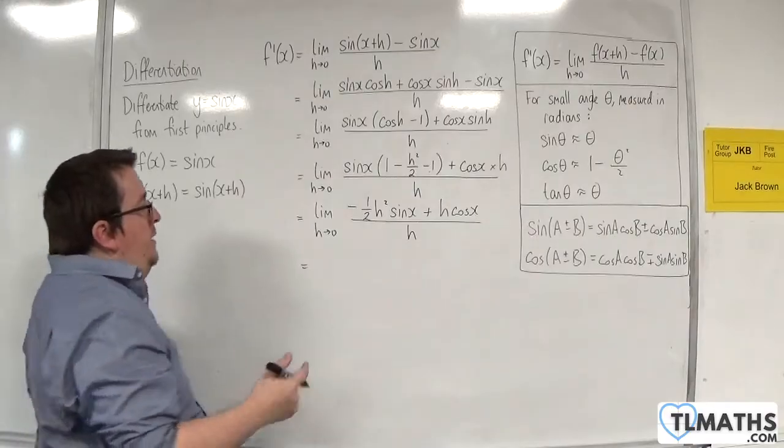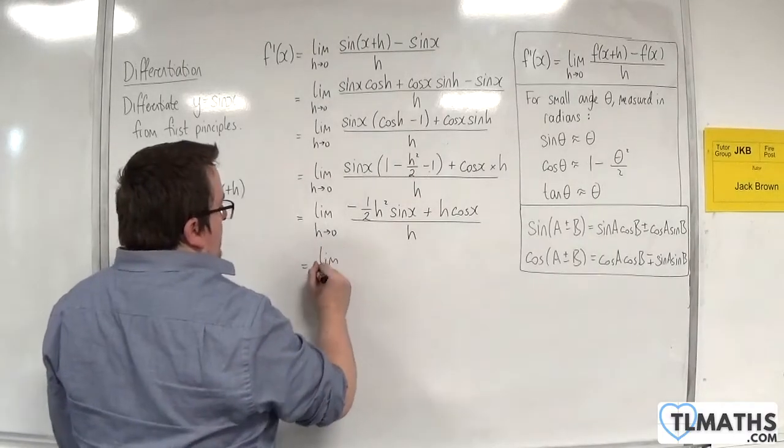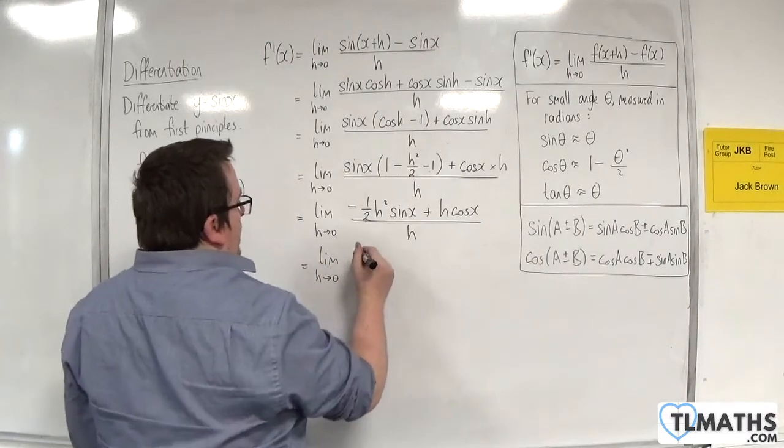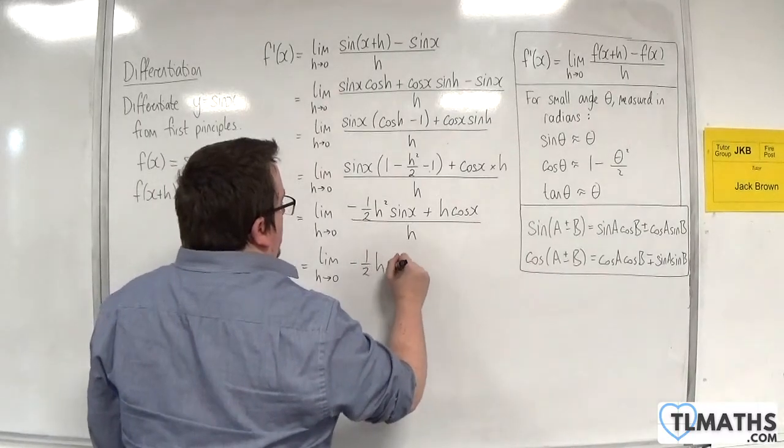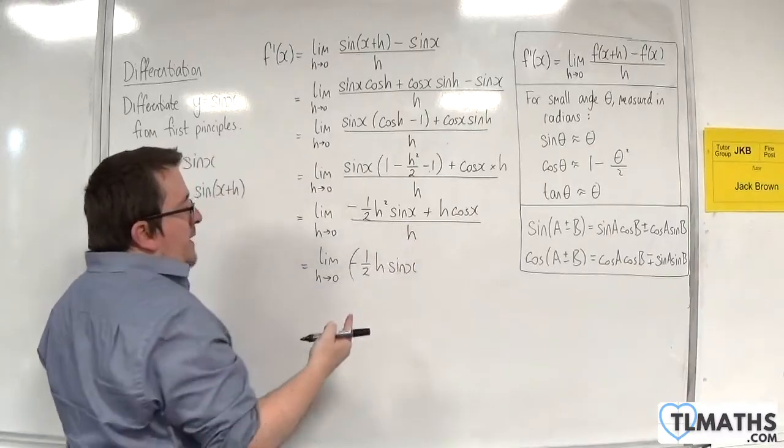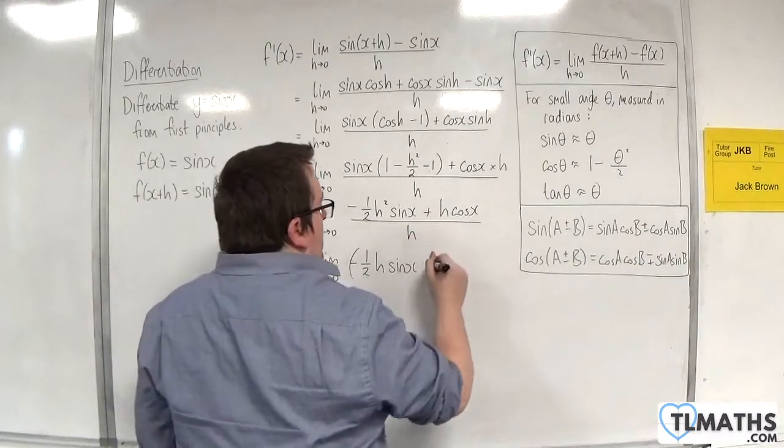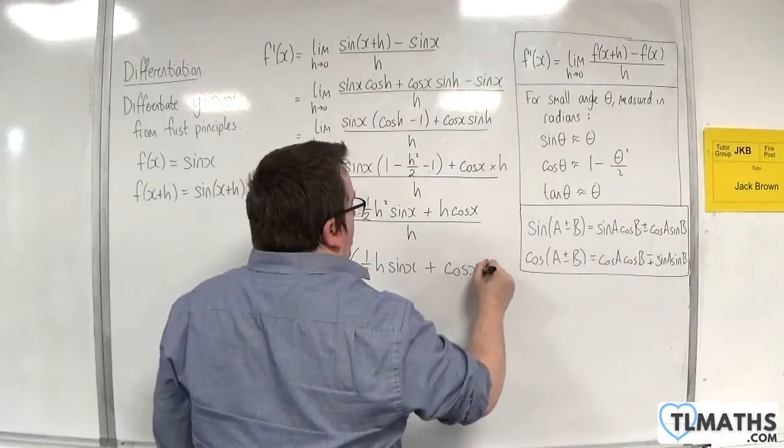I can now divide through by the h. So the limit as h tends to 0 of, we'll have minus one half h sine x, because we've divided through by an h, and we'll divide through an h there. Plus cosine x.